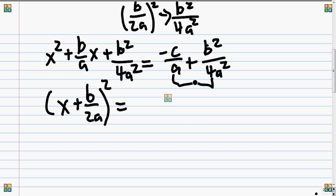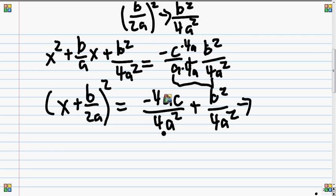Remember, you want to get these the same, so how would I do that? What's the difference between 4a² and a? Well, the difference is 4a, because a times a is a², and 4 times a² is 4a². So what we want to do is multiply both sides by 4a to get the denominators the same. Okay, and so this turns into 4ac, -4ac over 4a². So -4ac/4a² plus b²/4a², b²/4a².